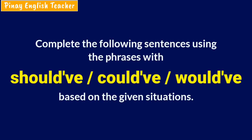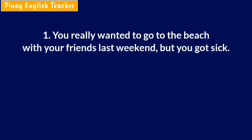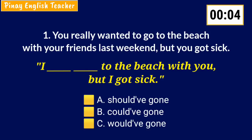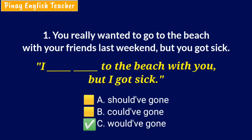Now let's start the quiz. Complete the following sentences using should've, could've, or would've based on the given situations. Number one: The situation is, you really wanted to go to the beach with your friends last weekend but you got sick. Now you're talking to your friend and you say: I blank to the beach with you, but I got sick. A. Should've gone. B. Could've gone. C. Would've gone. The answer is C — would've gone. You were willing to do something in the past but you didn't do it because of a certain reason.